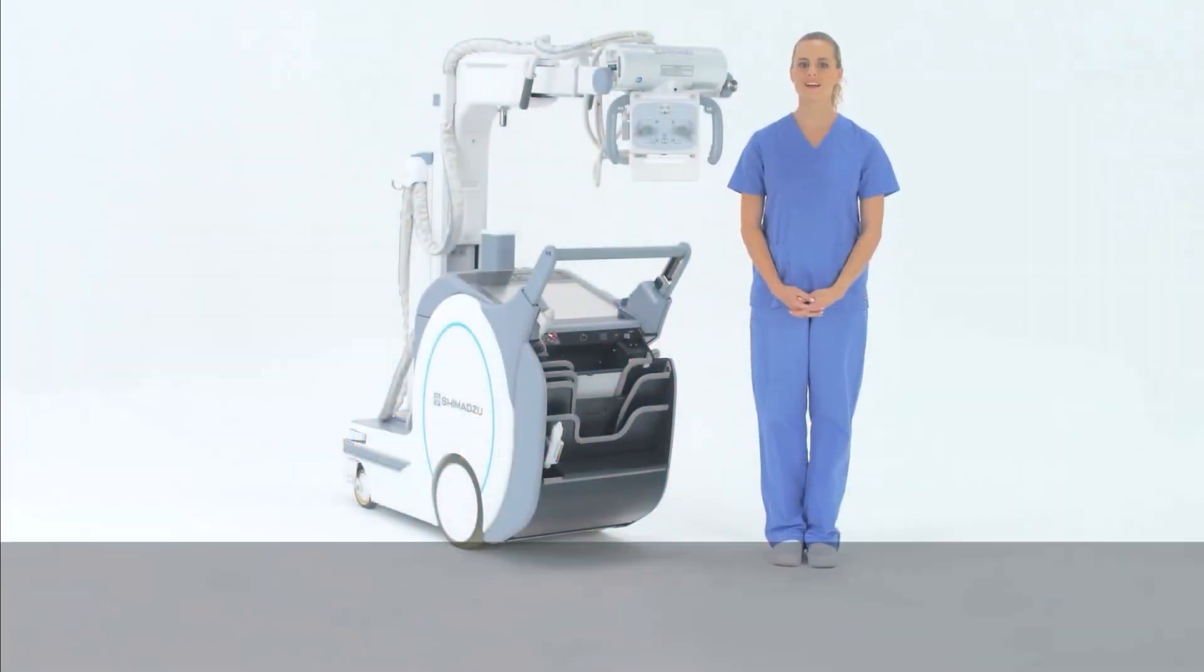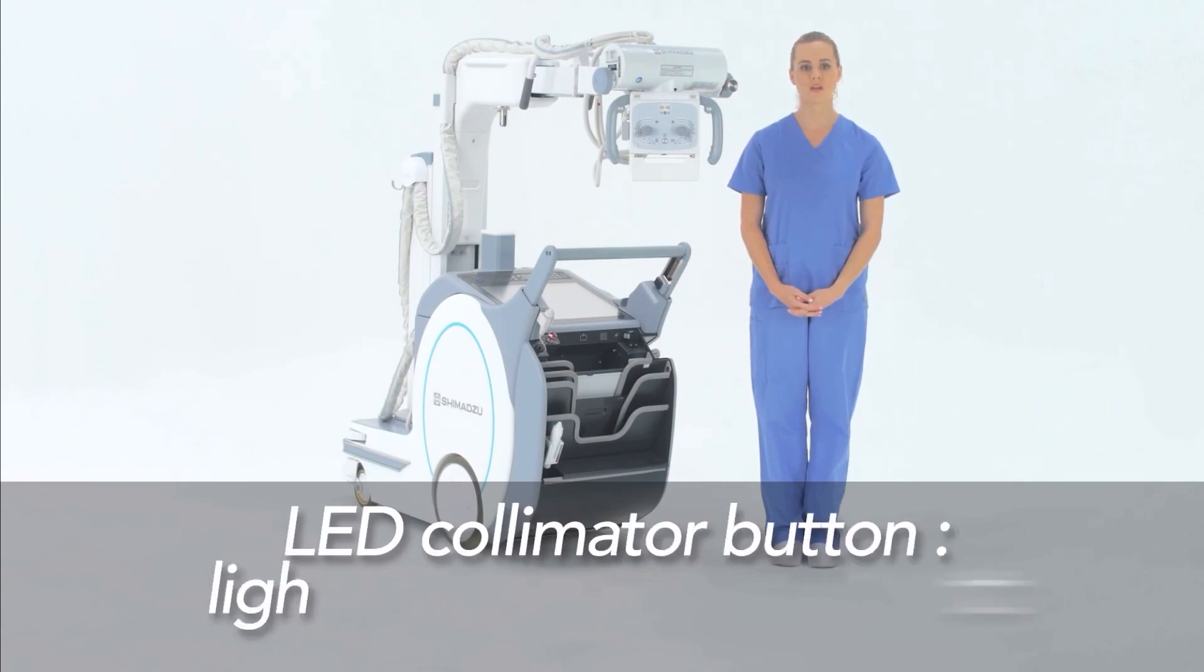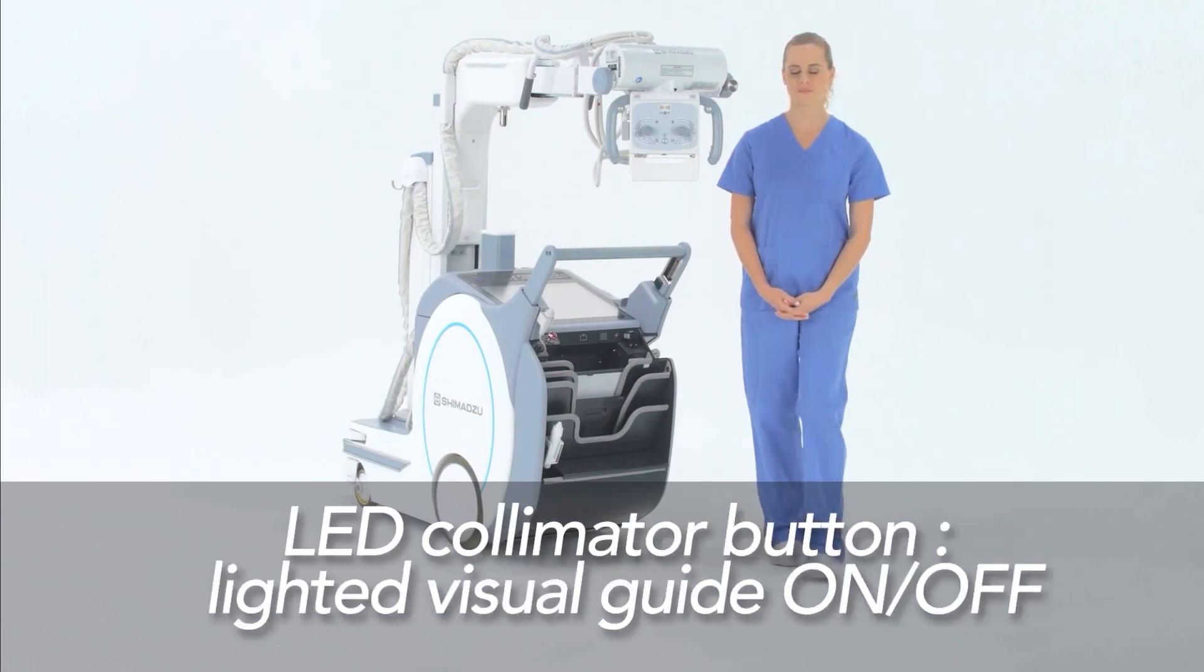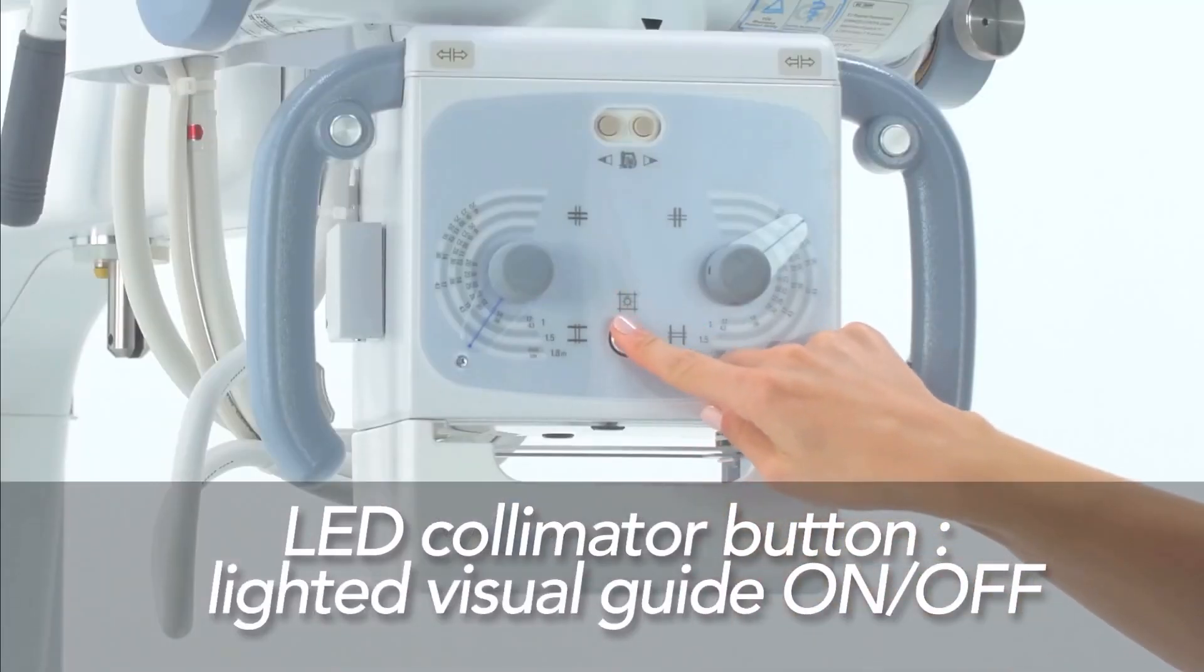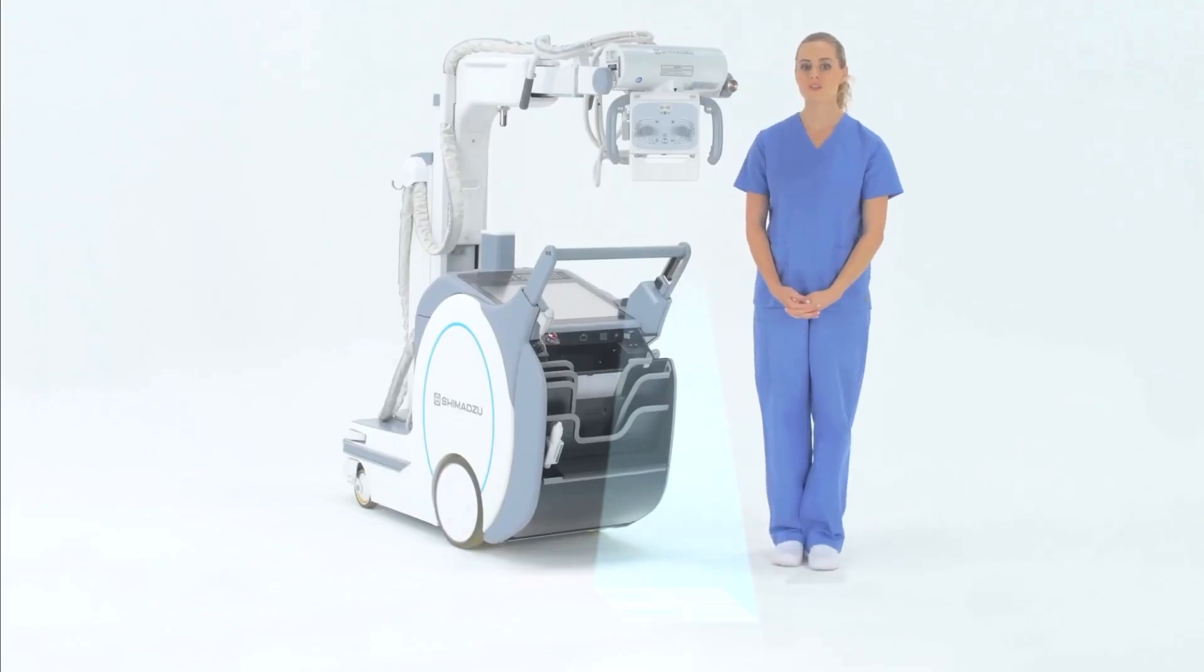The LED collimator button provides a lighted visual guide of the irradiation field. The light can be adjusted using the field adjustment knobs here.